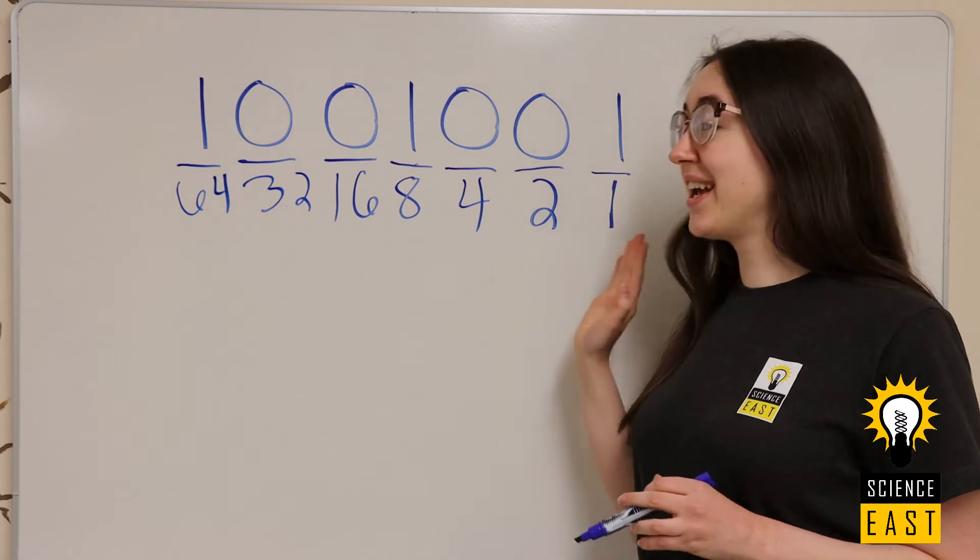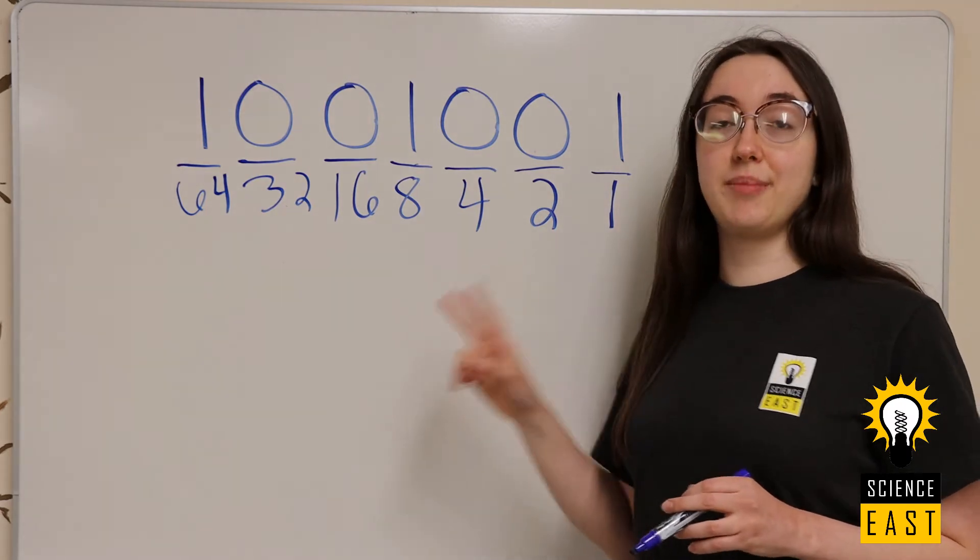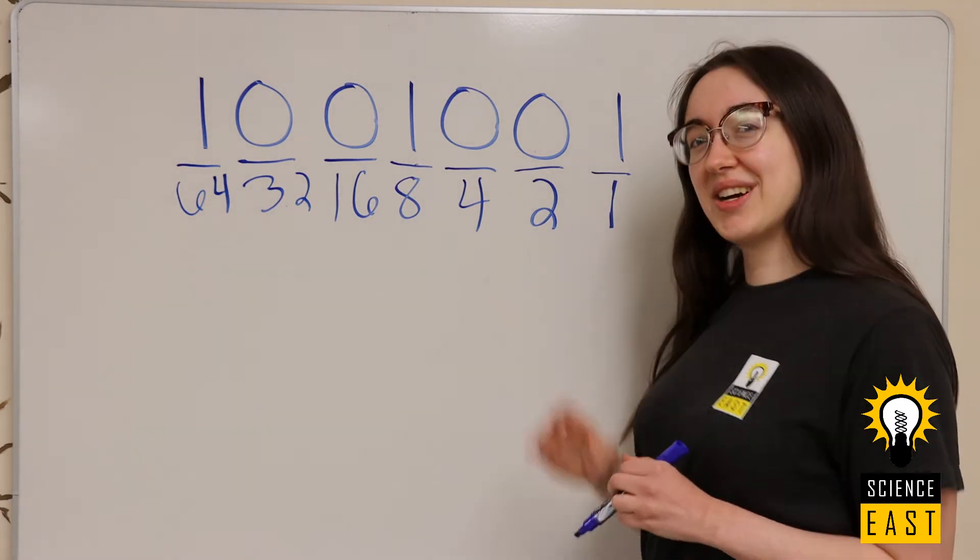Do you see a pattern? Each digit is multiplied by 2. Now let's try this example.